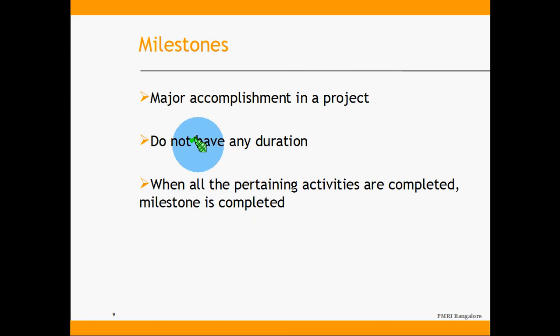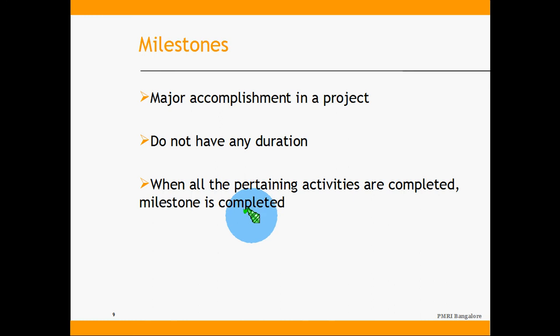This is the 8-80 rule. Milestones are major accomplishments in a project — they do not have any duration. When all the pertaining activities are completed, a milestone is completed. For PMP, achieving the 35 contact hours is a milestone. For a course, completion of the videos, completion of the reference material, and completion of the online test are all milestones.